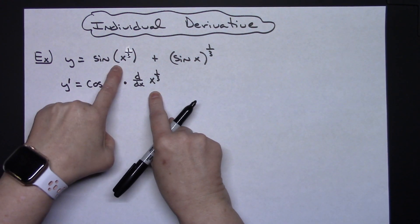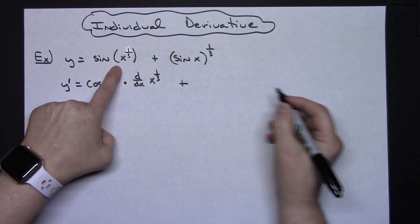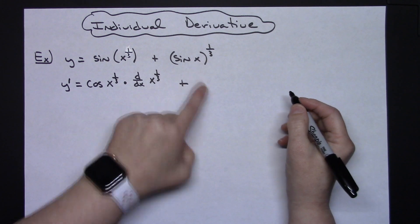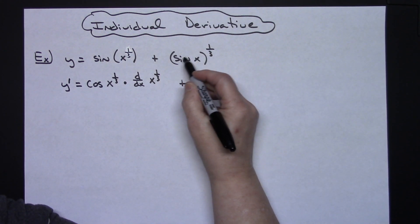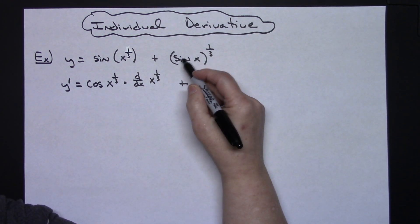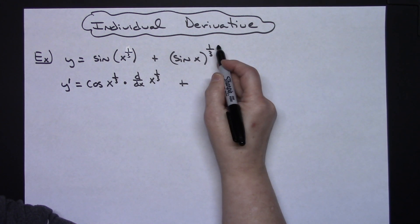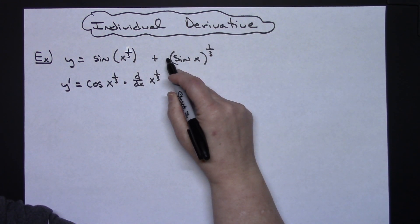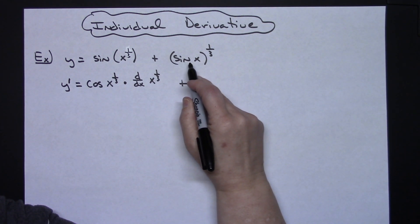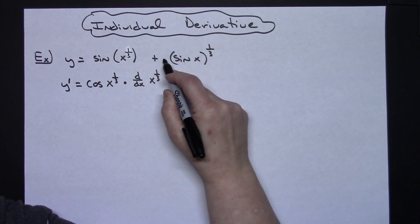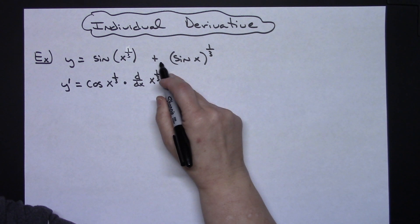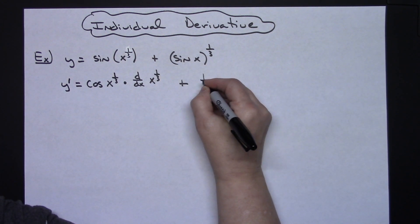Now for the second term: my inside function is sine x and my outside function is something raised to the 1/3rd power. I'm going to apply the power rule to the outside function and then chain rule on the inside — pulling that 1/3rd down in front.